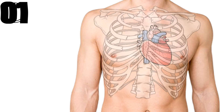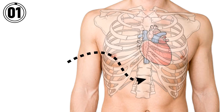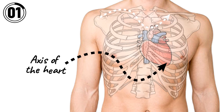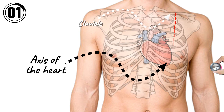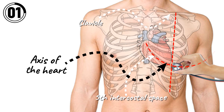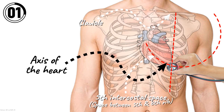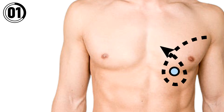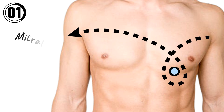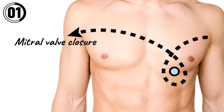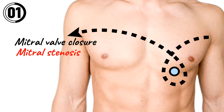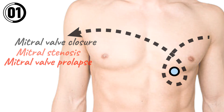The first auscultation point is at the apex of the heart. The stethoscope should be placed at the junction of the mid-clavicular line and the fifth intercostal space — the space between the fifth and sixth rib. This auscultation point is best for hearing the mitral valve closure and murmurs like mitral stenosis and mitral valve prolapse.